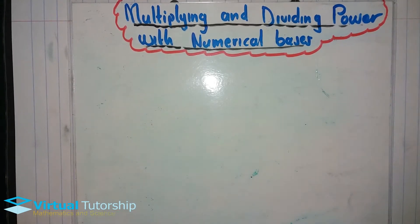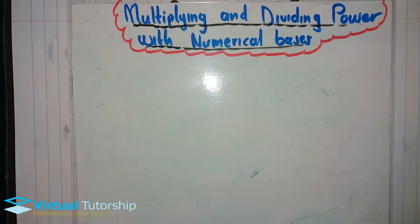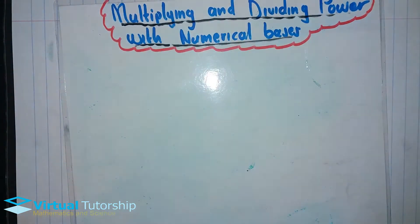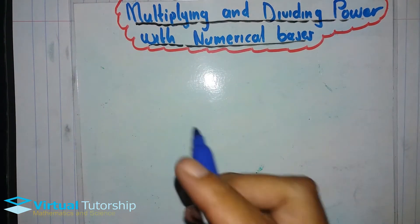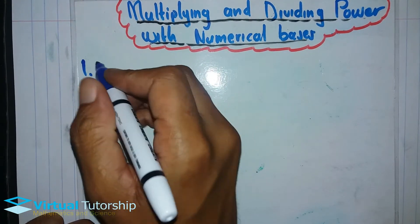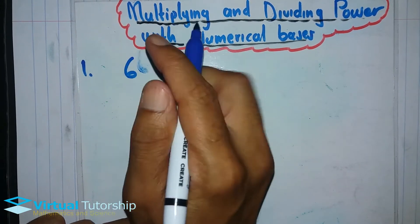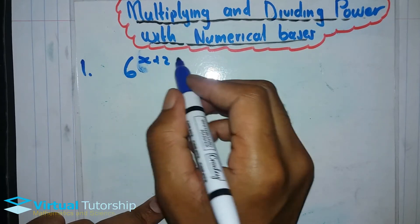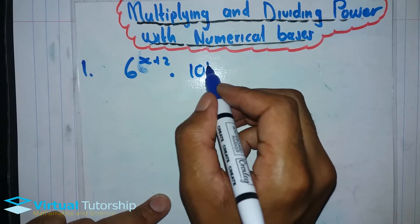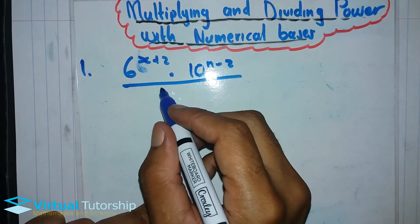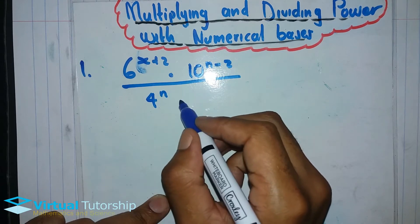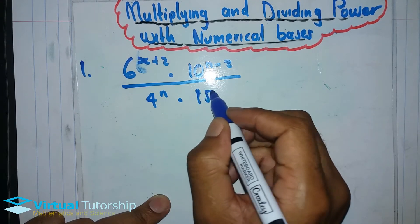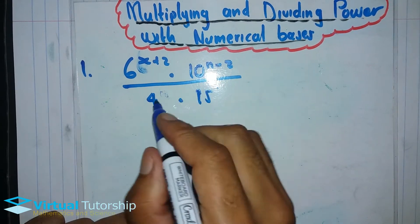In this video we'll cover multiplication and division of powers with numerical bases. The first example we'll work through is: 6 to the x plus 2, times 10 to the negative 2, over 4 times 15 to the x.